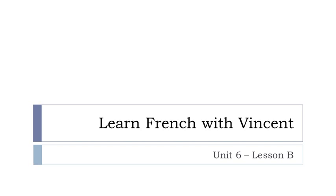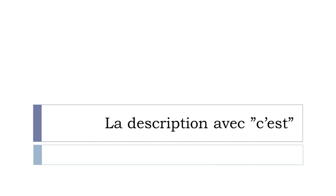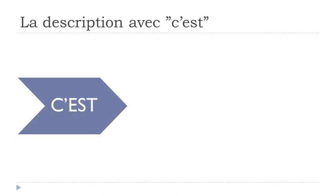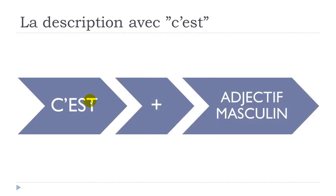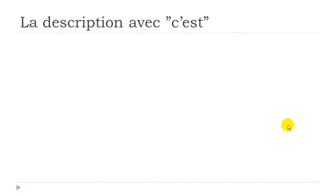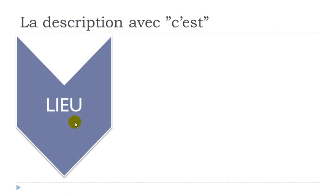Bonjour à tous and welcome to Learn French with Vincent. This is Unité 6, Leçon B. In this lesson we'll see together la description avec C'est. If you want to use 'c'est' to make a description, it would be directly translated as 'it is' or 'this is'. But in French, the adjective after must always be at the masculine form.